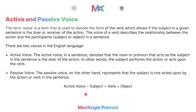In passive voice, this sequence is reversed. The subject becomes the receiver of the action — the one acted upon. So in passive voice the sequence is: object first, then verb, then subject. To recap: in active voice the order is subject + verb + object; in passive voice the order is object + verb + subject.